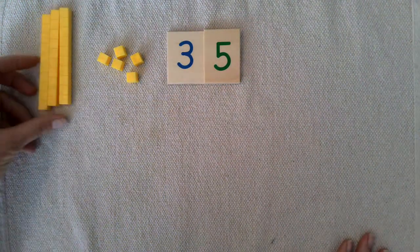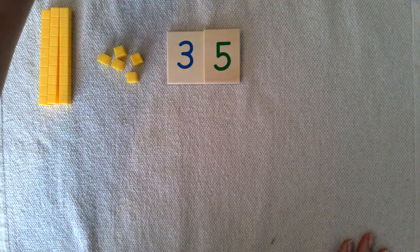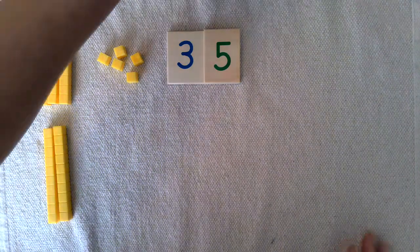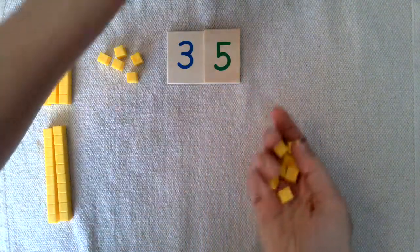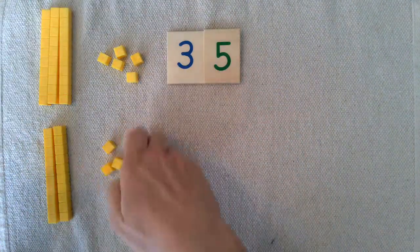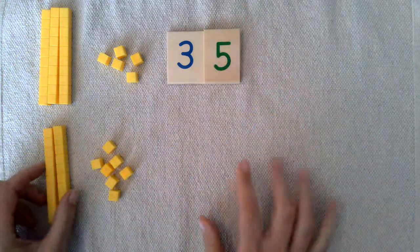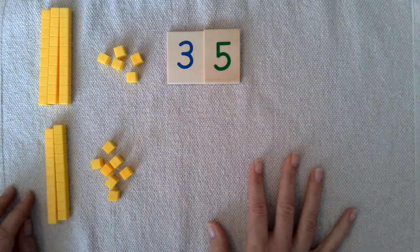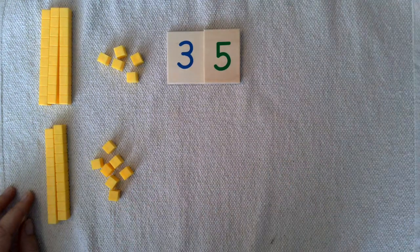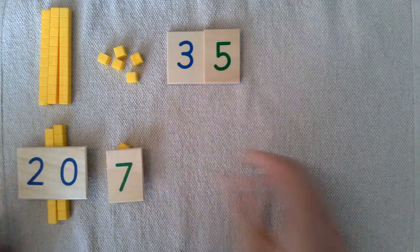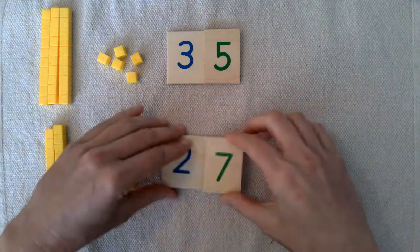And then another child can build the second addend, and this is going to be 27. So two tens and one, two, three, four, five, six, seven ones or units. And then another child can build the number with the cards and put them together.